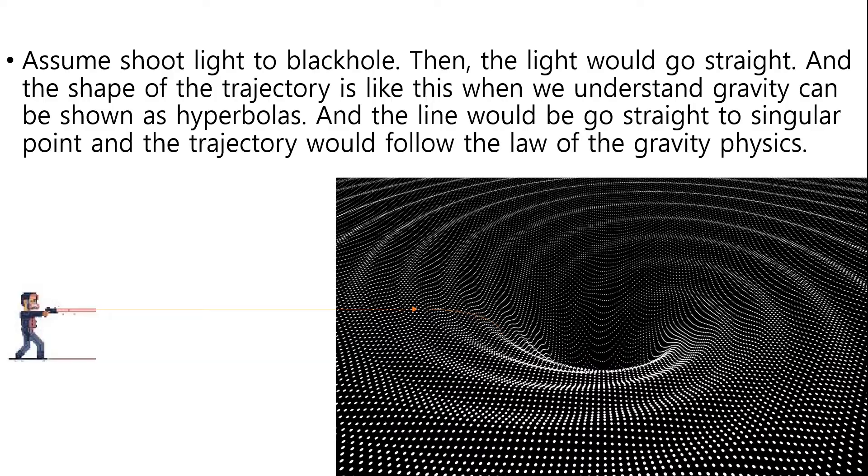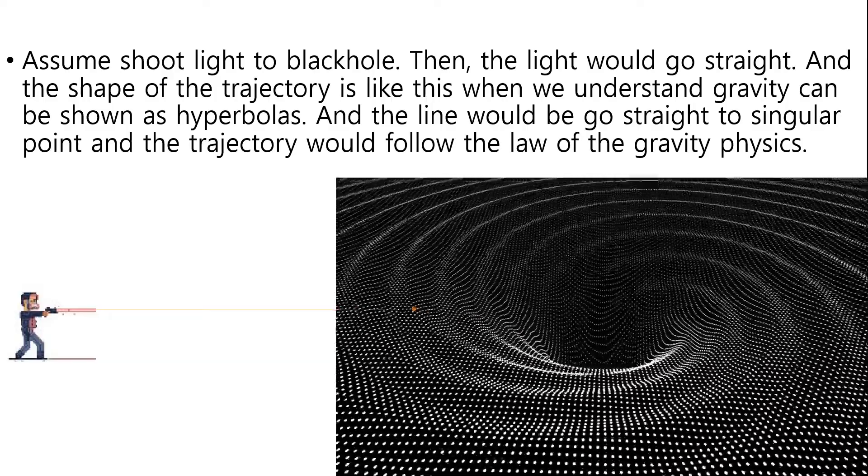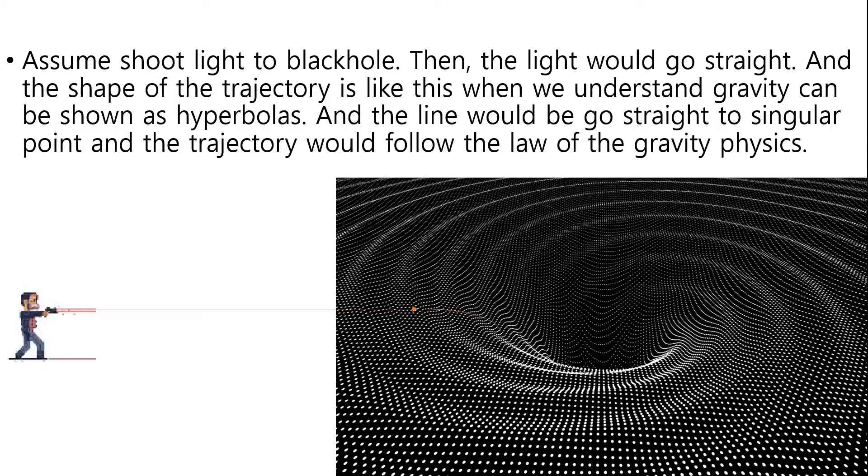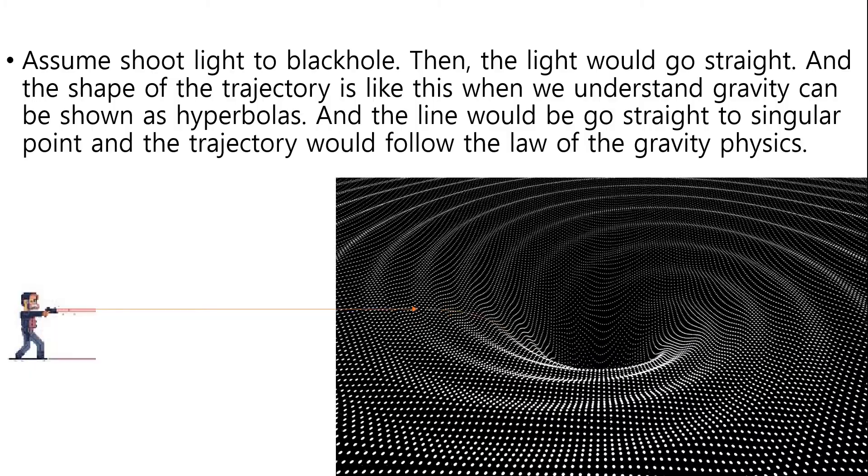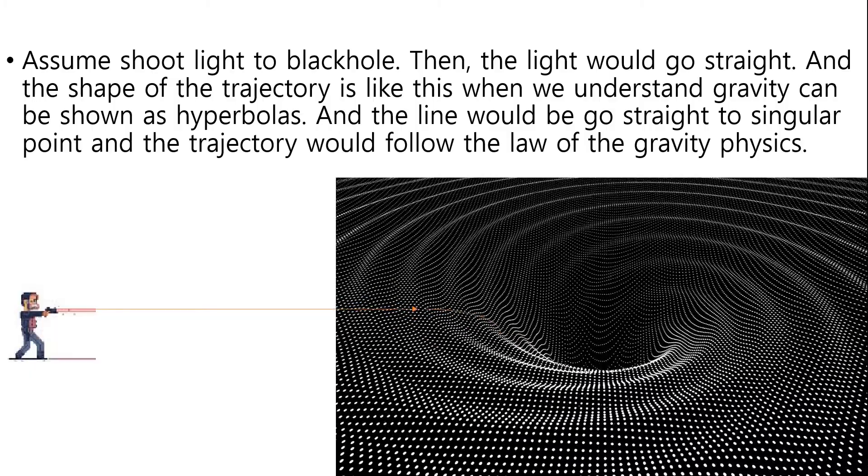And the line would go straight and the shape of the trajectory is like this. When you understand gravity, it can be shown as hyperbolas. And the line would go straight to a singular point and the trajectory would follow the law of the gravity physics.